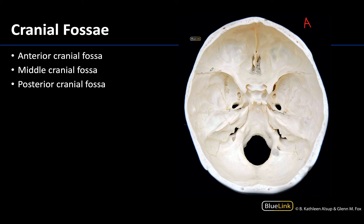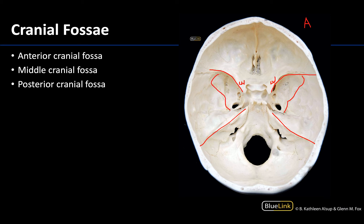Let me draw a few lines to help get an idea of these boundaries. The anterior cranial fossa will be between the front or the anterior portions of the frontal bone back to the lesser wings of the sphenoid. These right here are the lesser wings of the sphenoid — lesser or smaller than the larger greater wings of the sphenoid, which make that butterfly shape. So the anterior cranial fossa is between the front of the frontal bone and the lesser wings.